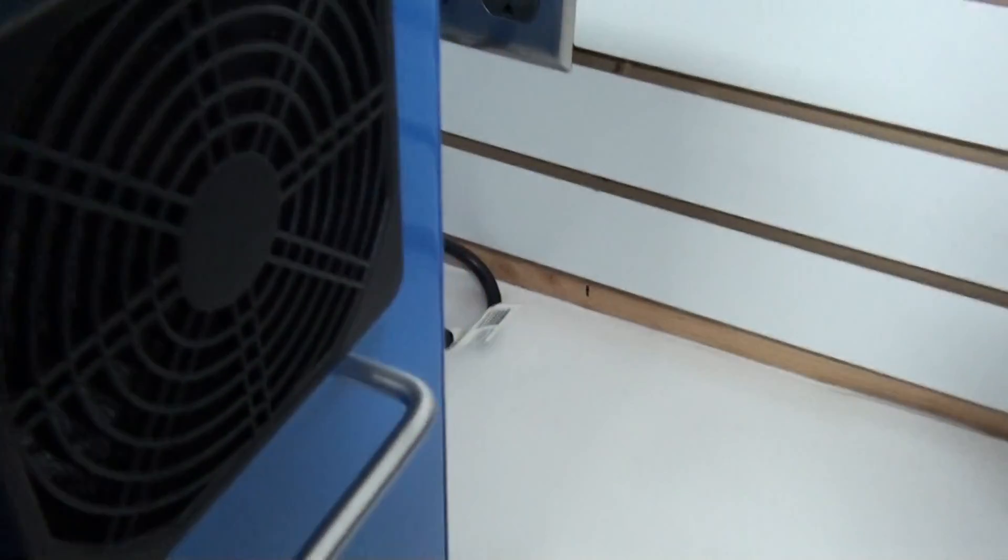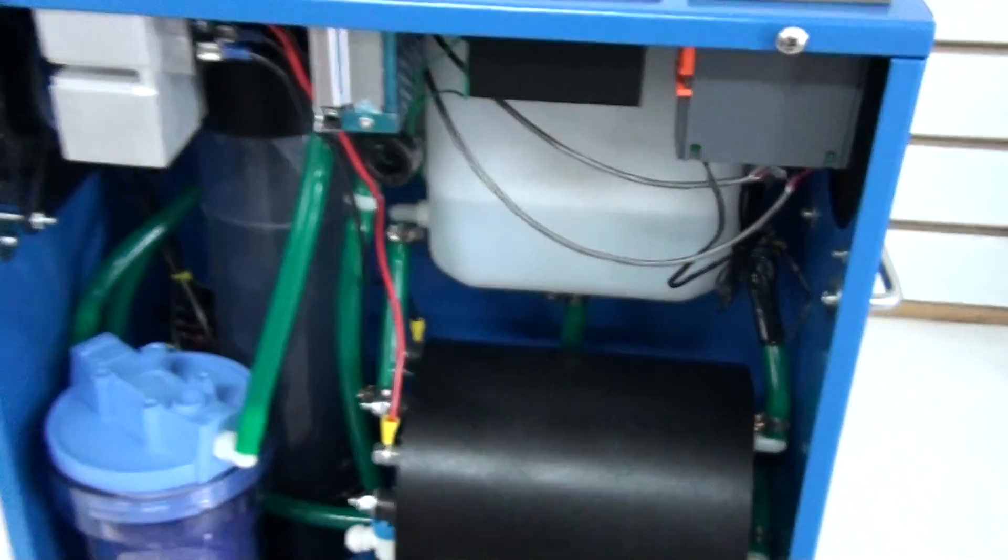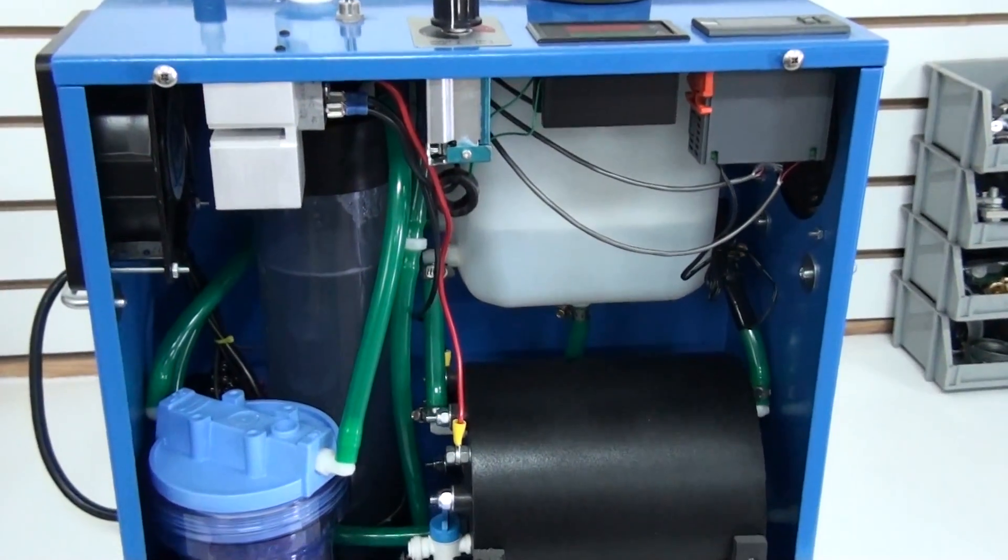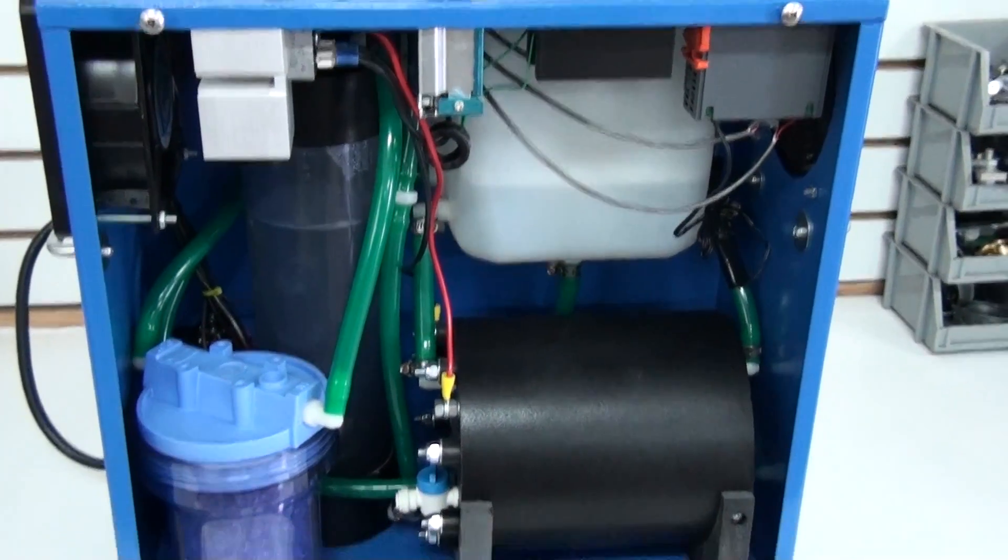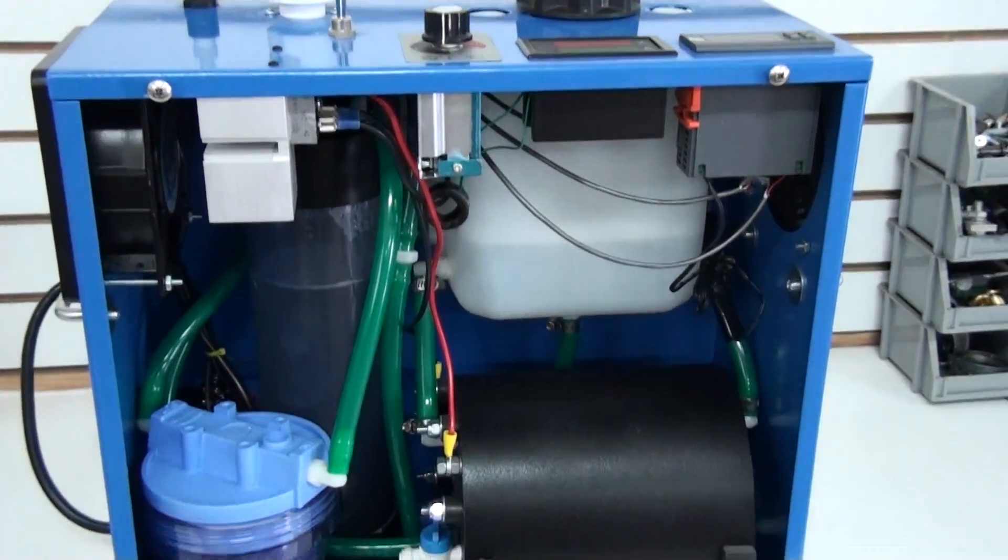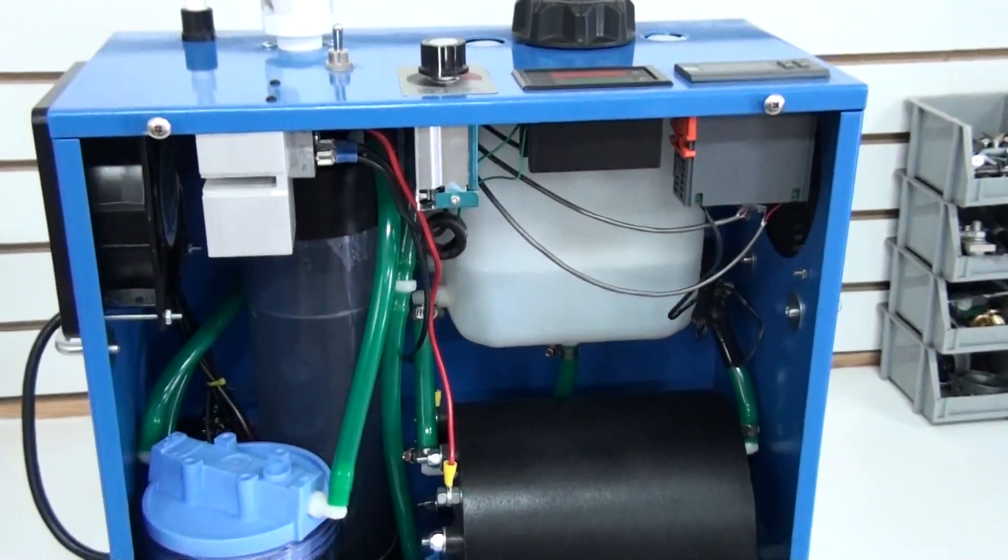We're moving the front here. Okay, so what this machine does is it generates Brown's Gas or HHO from water by using electricity to break down water into oxygen and hydrogen.